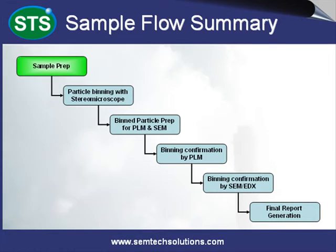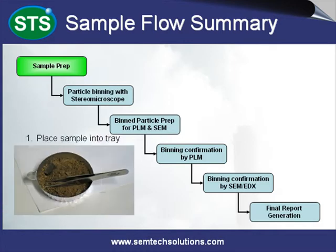To properly prepare a sample for analysis, we typically run through a three-step process. First, we use a spatula to randomly scoop different parts of the sample and deposit them into an aluminum dish. Next, we remove any obvious organic matter from the dish with tweezers — for example, this may include sticks and leaves. Also at this point, if there are larger suspect particles contained in the original sample, we will add these to the dish as well.